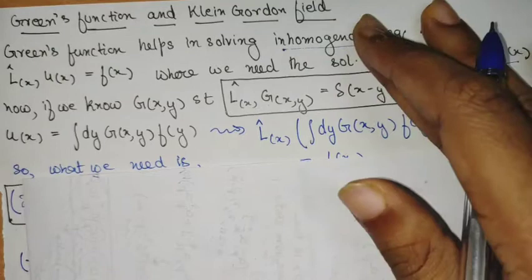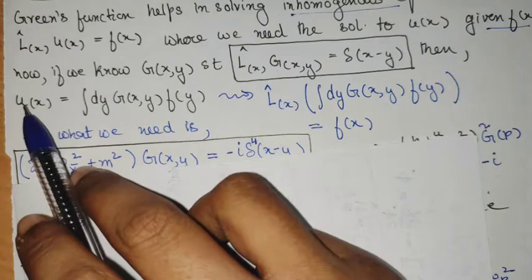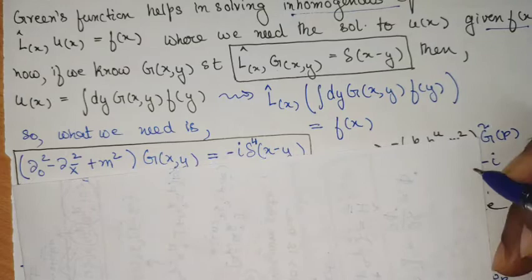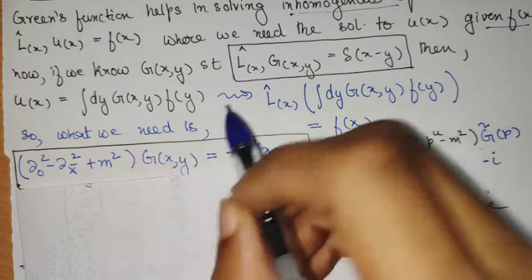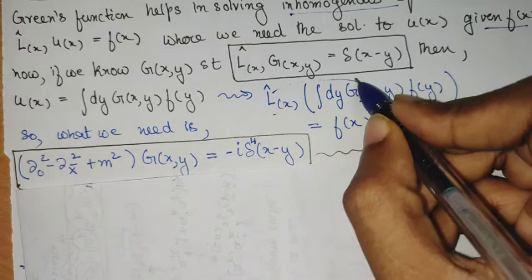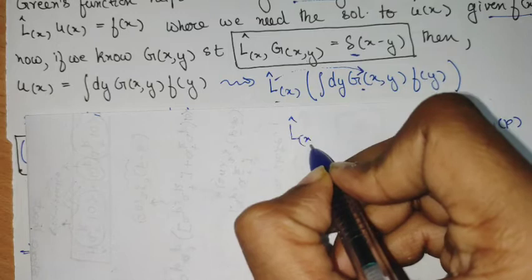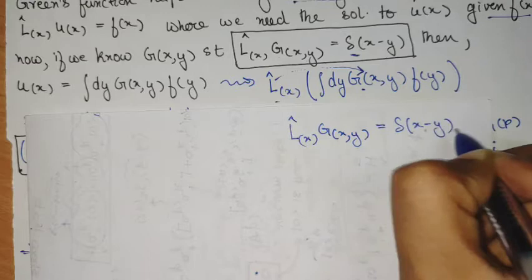Now why this is interesting is because if the Green's function is known, I can readily say that U(x) will be of the form: integral dy G(x, y) f(y). I have removed the homogeneous part of the solution, which is also responsible for different choices of contour. Why this is a solution is simple: if I operate with L(x), due to the differential operator acting on G(x) producing a delta function, we will finally get f(x). In the end of the day, the Green's function is a function of two variables that helps us solve this kind of equation.